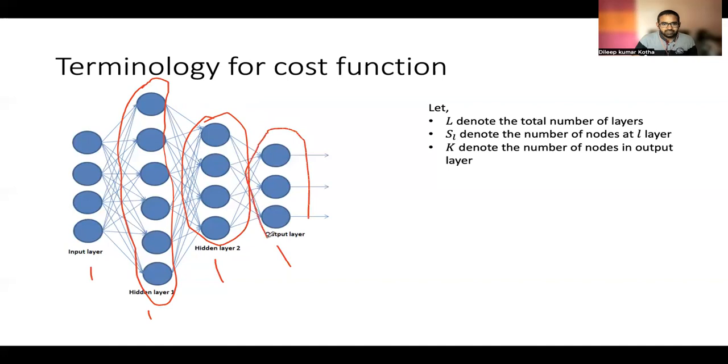And K denotes the number of nodes in output layer. Here the value of K is three. In a multiclass classification problem, if you know that we have to identify between five different things, then K will be five. Here we are identifying three different things like in previous slide. So, K will be three.